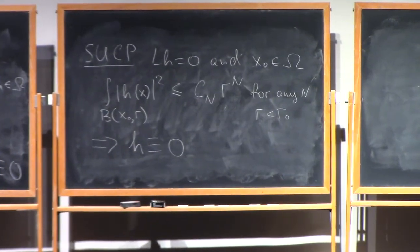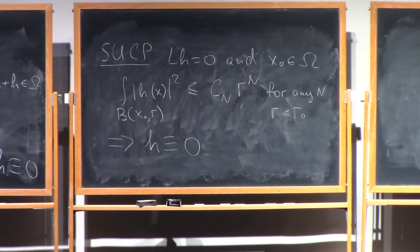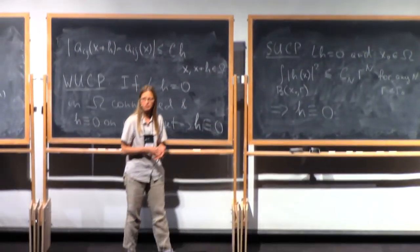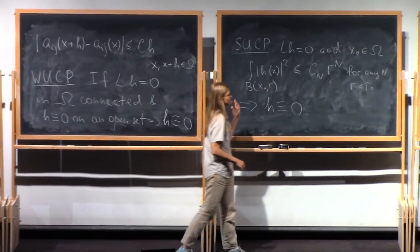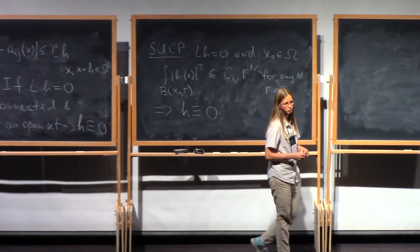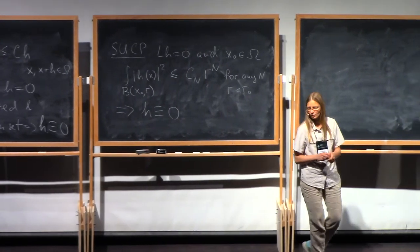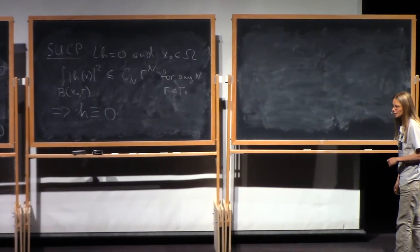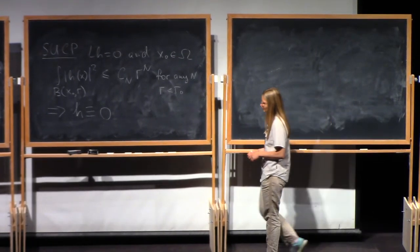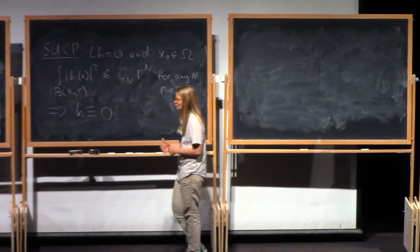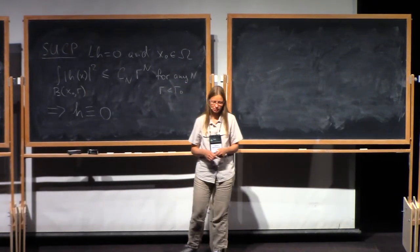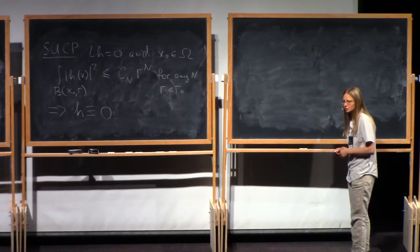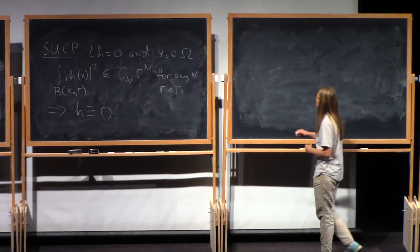So one of the aims of these four lectures is to prove a quantitative version of this result of non-vanishing on sets of positive measure. So we'll come back to it in the last two lectures. And another aim of the lectures is to connect what we are going to learn to eigenfunctions, so we'll spend most of the time today talking about eigenfunctions.